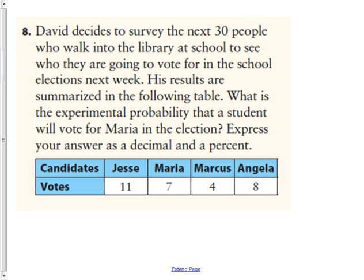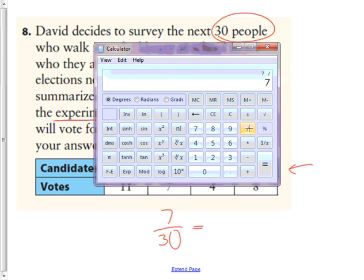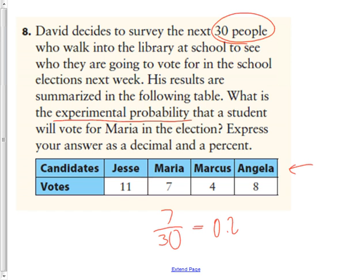Question 8 says, David decides to survey the next 30 people who walk into the library at school to see who they are going to vote for in the school elections next week. His results are summarized right here. So the question is, what is the experimental probability that a student will vote for Maria in the election? So what you have to do is you have to create an experiment for this. So out of the 30 people that he surveyed, 7 people out of 30 said they were going to vote for Maria. So that means from an experimental, if he was asked, well, what percent are going to vote for Maria, he could say 7 divided by 30 is 0.2333 repeating, or approximately 23.3% in his experiment voted for, will vote for Maria.